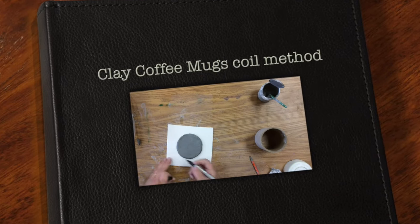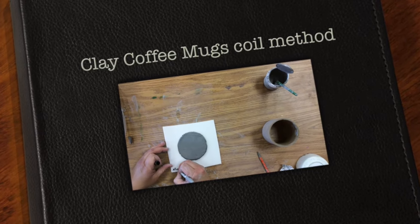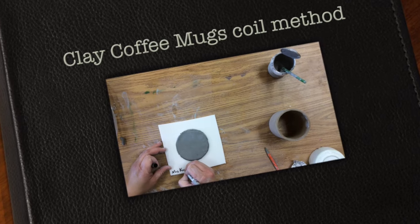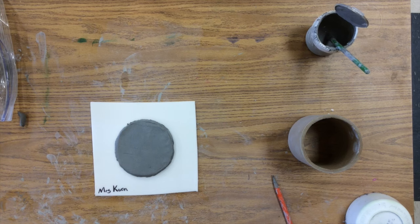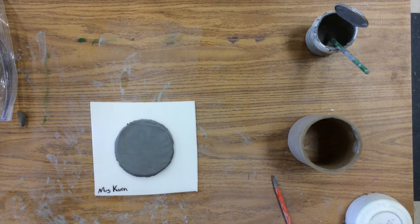All right, today we are going to make a coffee mug. The coffee mugs you have at home are made out of clay, and today we're going to make a real-life functional coffee mug. I'm going to give you a circle on a piece of styrofoam. Please write your name on the piece of styrofoam in case we don't get done today, because I want you to take your time with this and do a really good job.